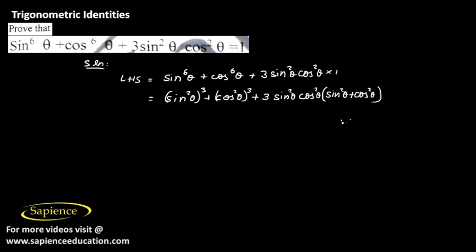So now this is of the form A plus B the whole cube. The algebraic identity A plus B whole cube can be expanded as A cube plus B cube plus 3AB into A plus B.